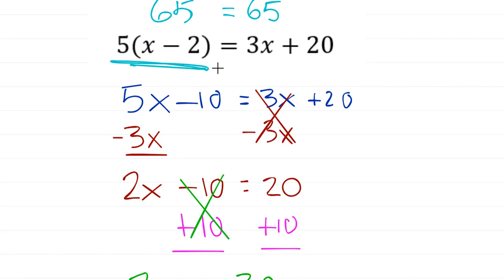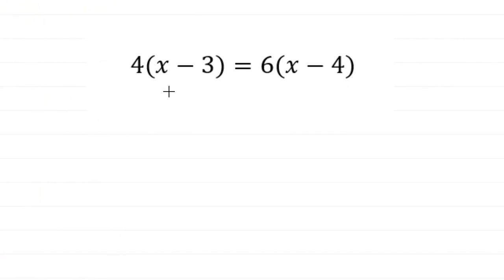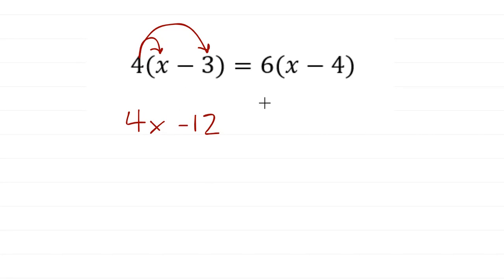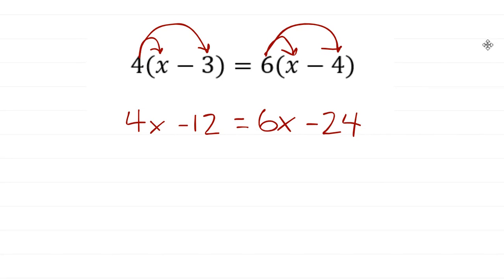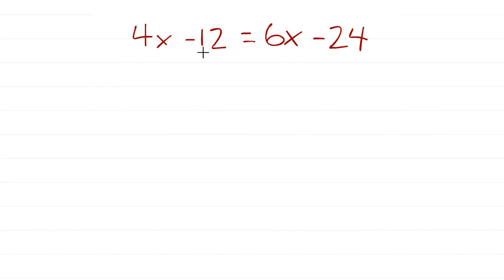That's how we solve these types of problems where variables are on both sides. Now the last one — this is very common — you've got the distributive property on both sides. Take your pick, work through it, and then we'll go through it together. I'm going to pick the left side first since there's no required starting side. That gives us 4x minus 12, and then I can do the right side at the same time in one fell swoop — just apply the distributive property to both sides right away.